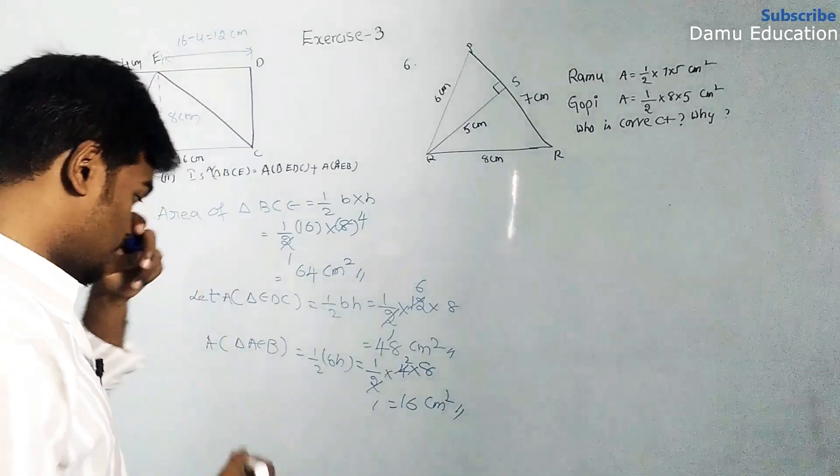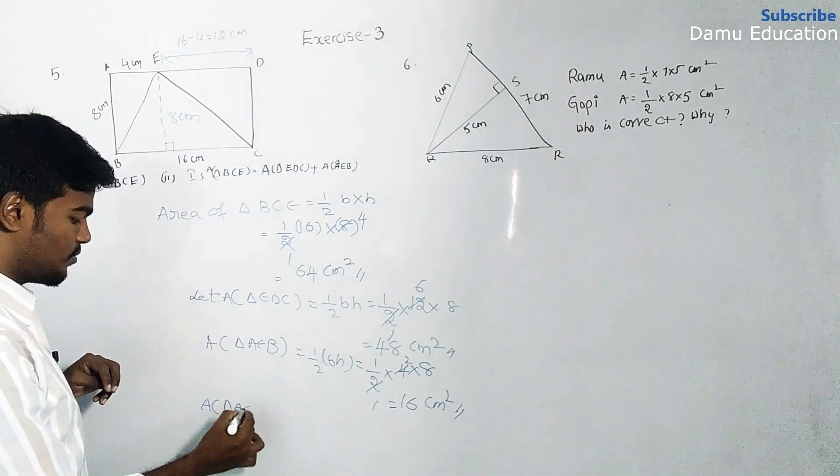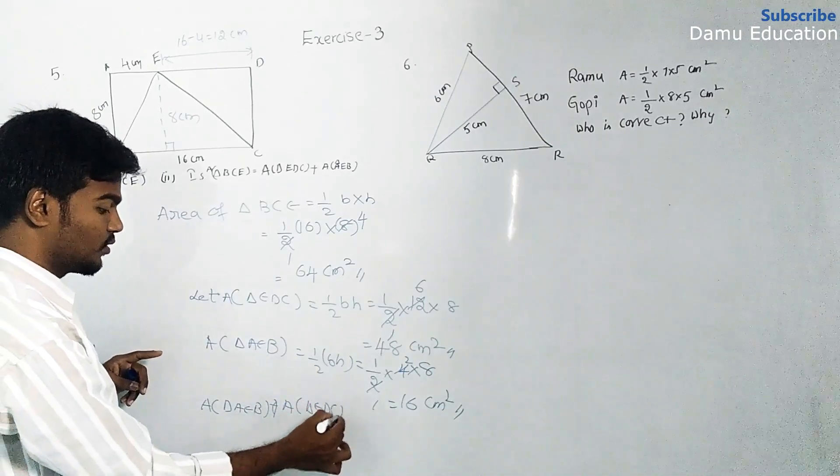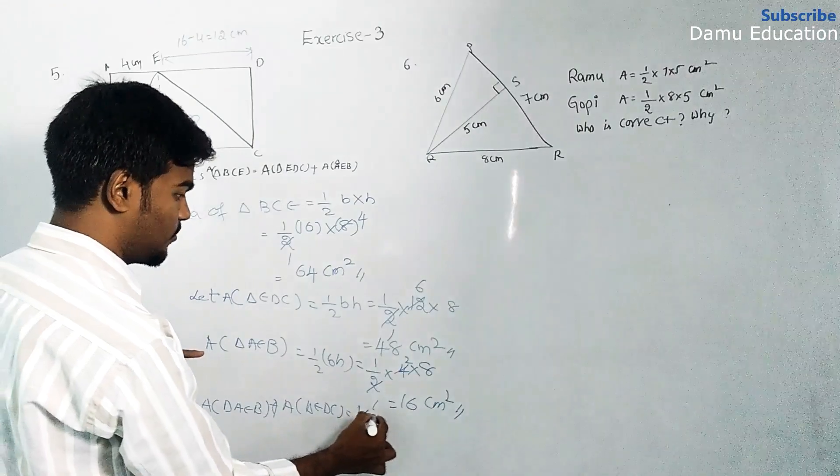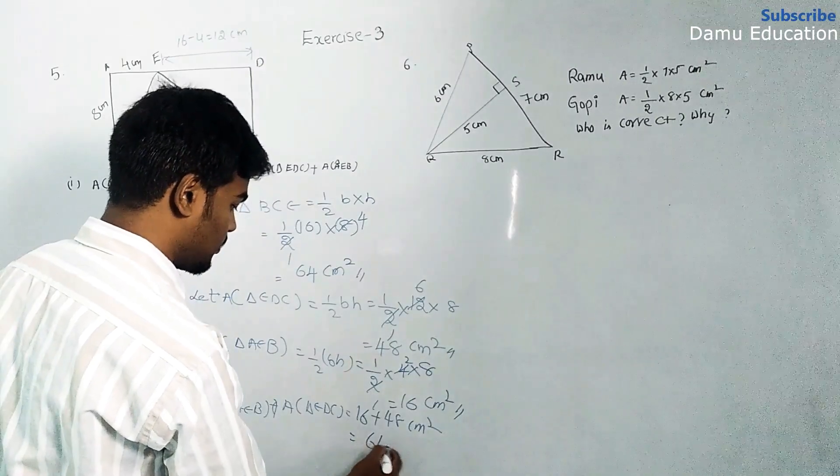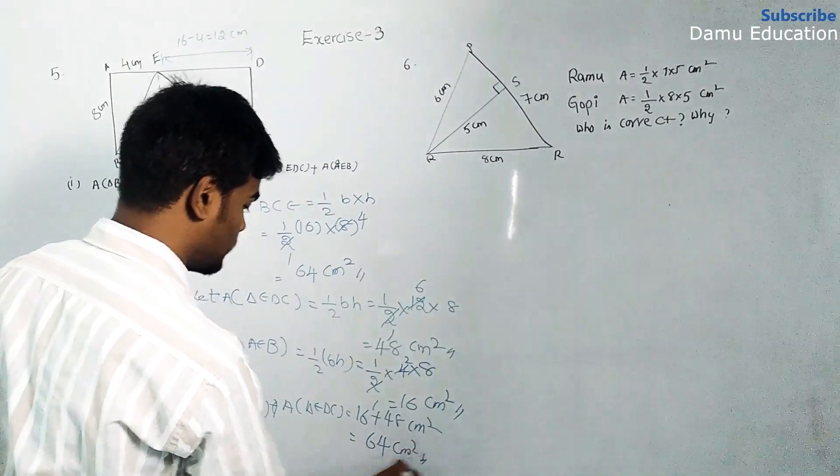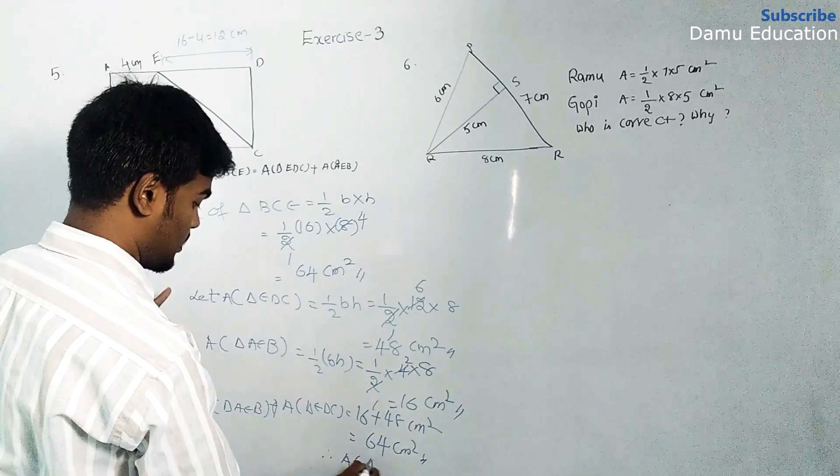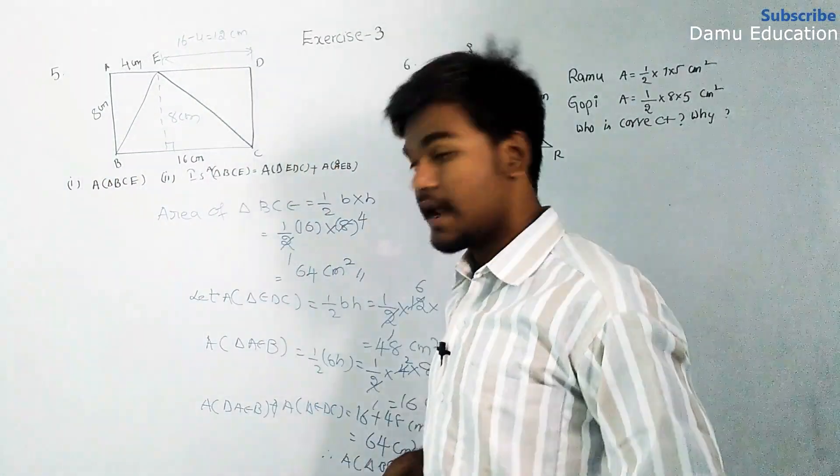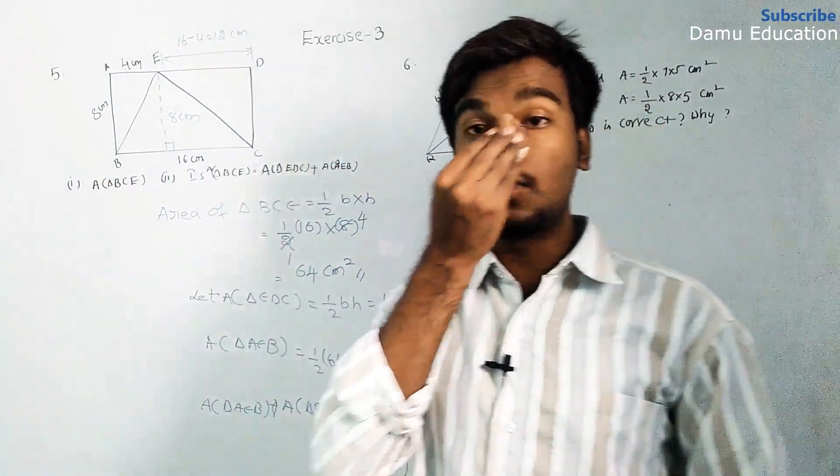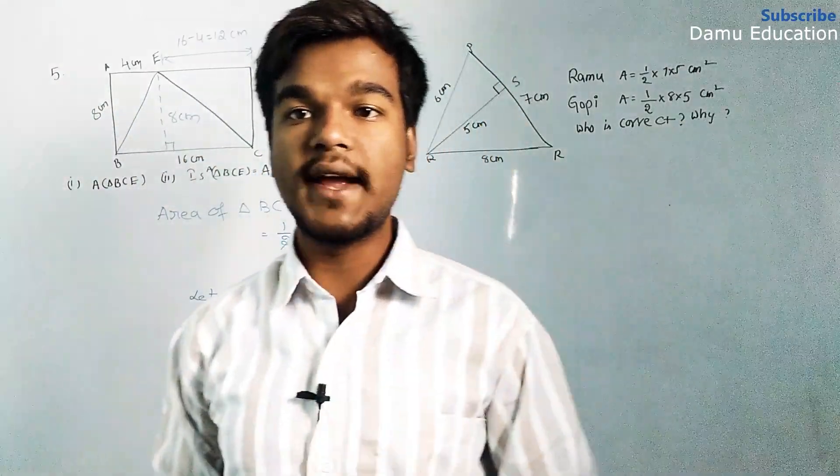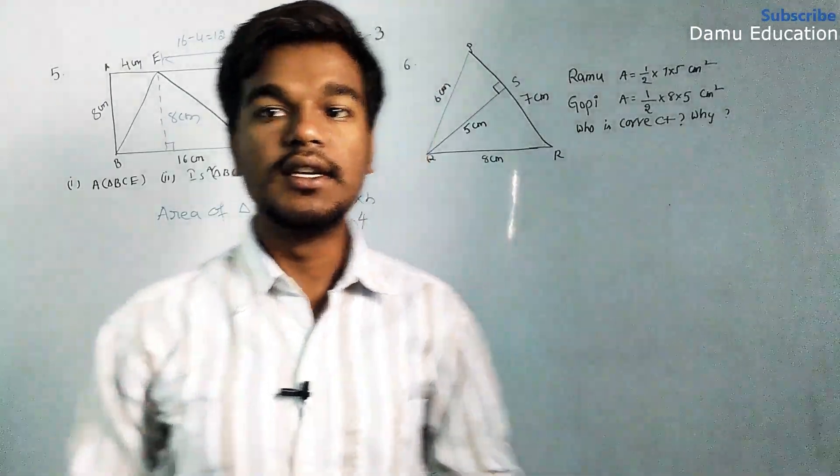The area of the sum of these two triangles, area of triangle ABE plus area of triangle EDC, will be equal to 16 plus 48 cm square, which is 64 cm square. This equals the area of triangle BCE.